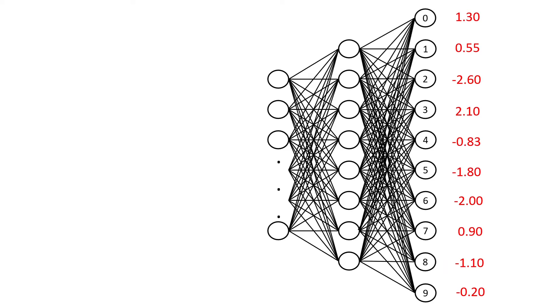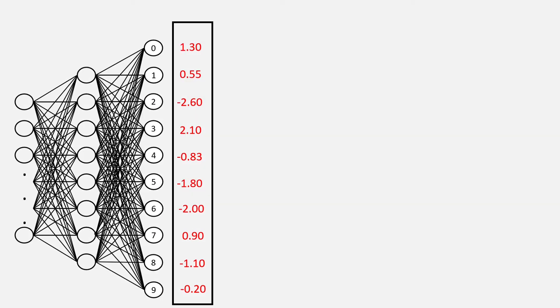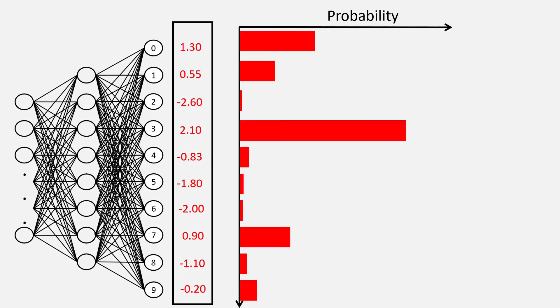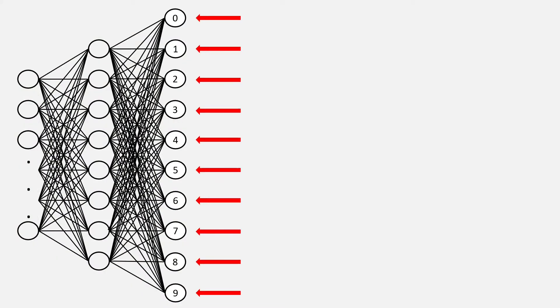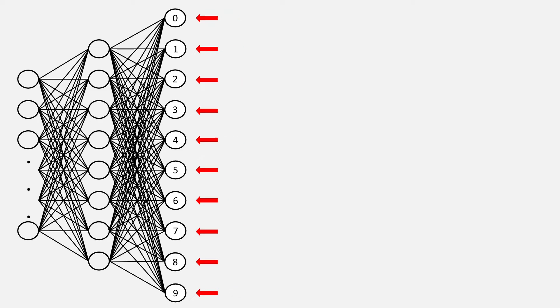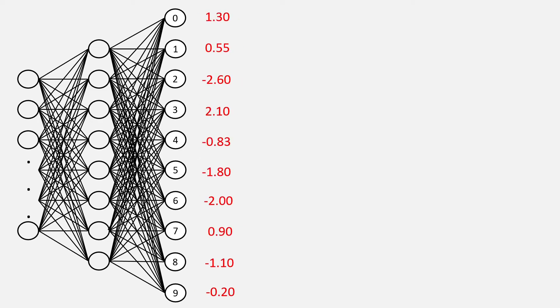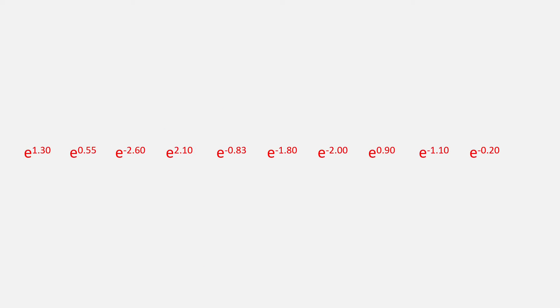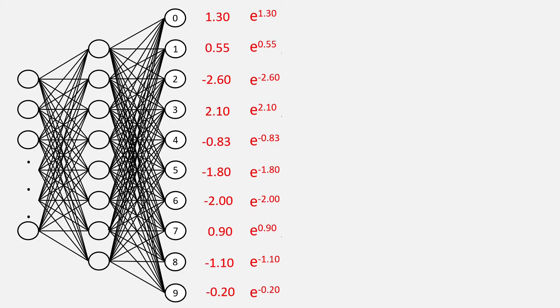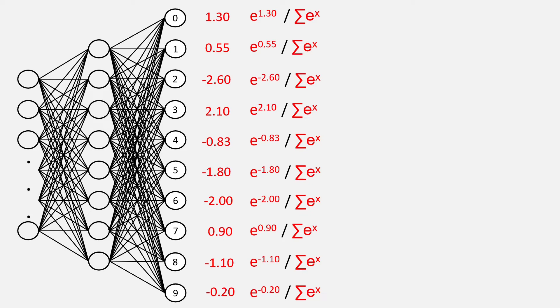What the softmax function will do is take all these outputs and convert them into a probability distribution. Since there are 10 digits 0 to 9, we will have 10 output neurons in the last layer, and for every output in the last layer we'll apply the exponent function. After that, we calculate the sum of the exponents of all the outputs and divide all the outputs by the sum.